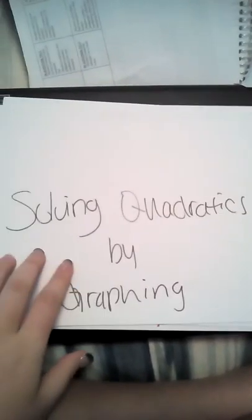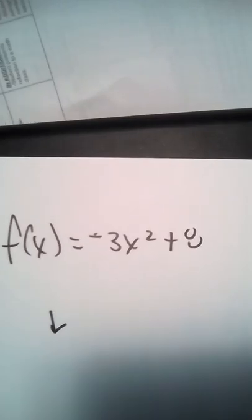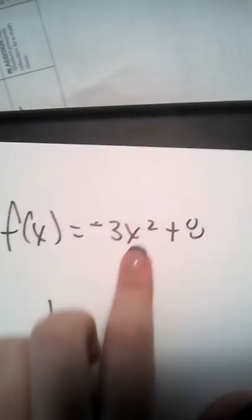Today's lesson will be on solving quadratics by graphing. Our first example is f of x equals negative 3x squared plus 8. As we can tell, the x squared makes us see that this is a parabola.